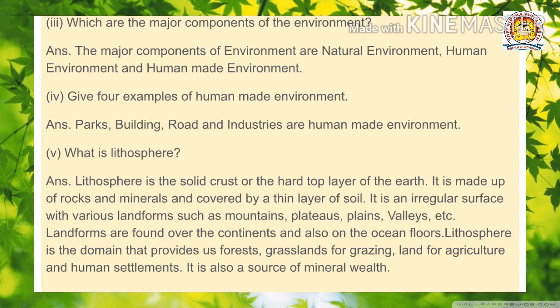Which are the major components of environment? The major components of environment are: natural environment, human environment, and human-made environment. Give four examples of human-made environment. Parks, buildings, roads and industries are human-made environments.